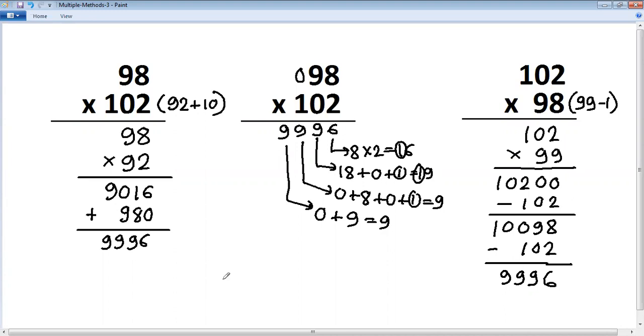So we get three methods. Understand what we have used here. First method is special case. Second method is criss-cross. And third is series of 9.